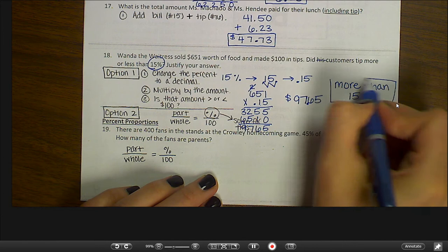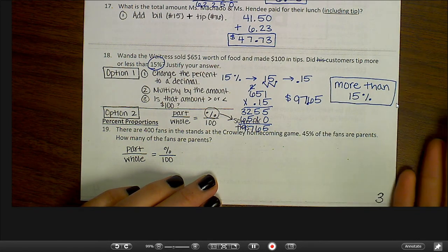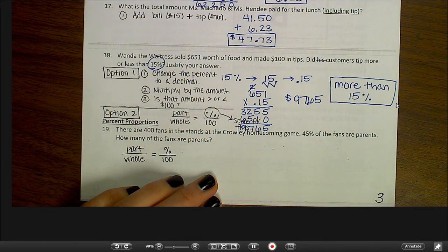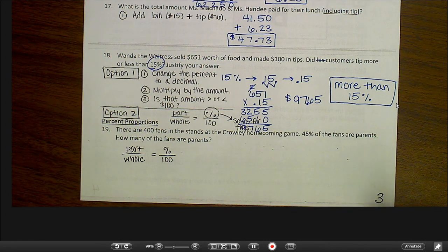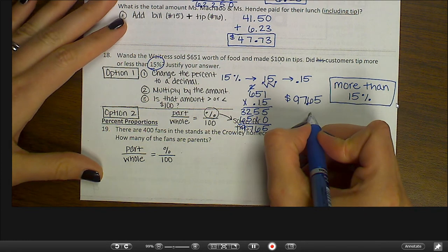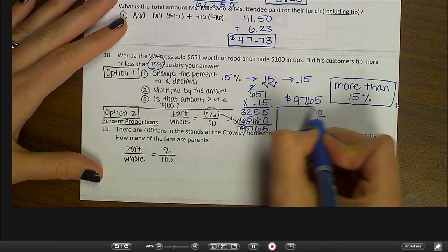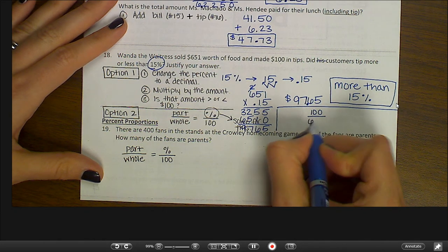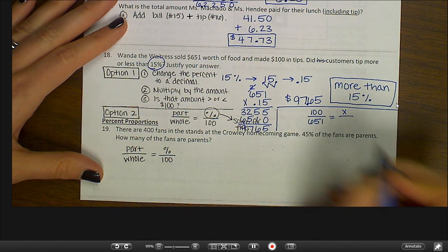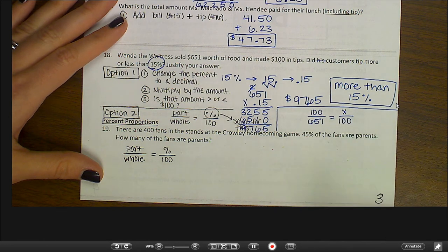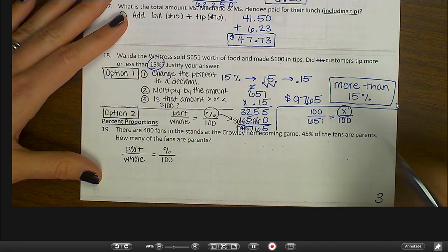Now if we wanted to do this as a percent proportion, I could figure out what is 15% of $651. Or I could figure out $100 is what percent of $651. So, let's see. If my part is $100. Out of a total of $651, I want to know what percent that is. So that's my X over 100%. And I could cross multiply to find out the percentage. And what I would get is a percentage that's a little bit more than 15%.